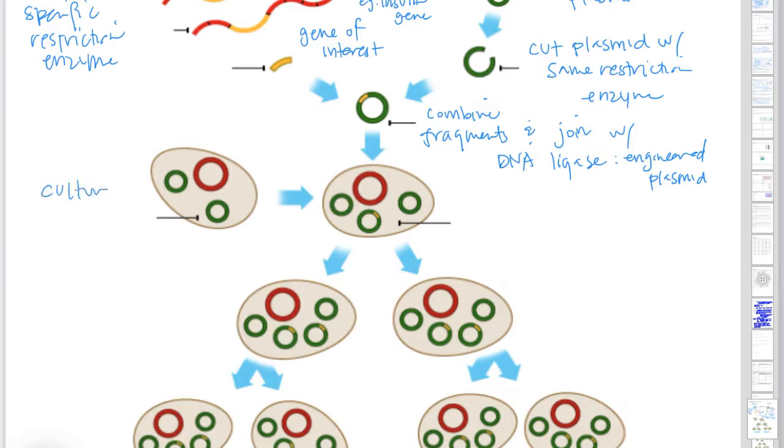Then you have to culture bacteria so that they're growing exponentially. We call it competent. I don't know why I really put that in quotes. It's just growing exponentially. So it's like adolescent bacteria. It's growing like mad crazy. And then you incubate the bacteria with the recombinant plasmid.